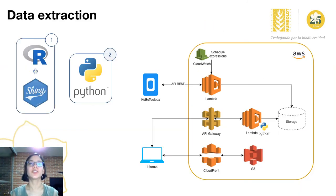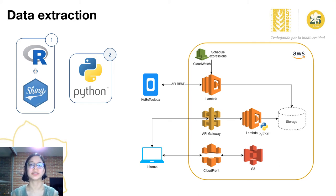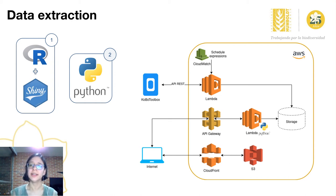The field forms can be downloaded through the KoBoToolbox API using programming languages like R or Python. Our first option was to use R to download and process data, and Shiny to create a web page to share the analyzed data using charts. Nevertheless, this approach requires several manual interventions and is very limited in terms of scalability.